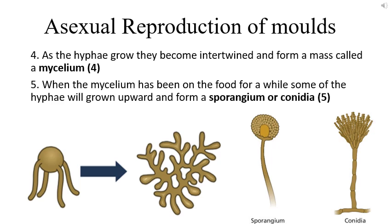As the hyphae, plural, grow even more, they become intertwined and form a mass called a mycelium. The mycelium is made up of many thousands of hyphae intertwined and interlocked together, and is typically what you will see on a food — what you will be familiar with when you think about what mold looks like. Now that the mycelium has been on the food for some time with favourable conditions — the correct temperature, enough food, and oxygen — it's going to form either a sporangium or a conidia, depending on the type of mold. You can sometimes see sporangium on foods as little black dots in the mold, while the conidia is a little harder to distinguish.